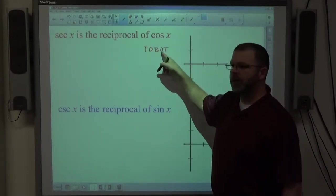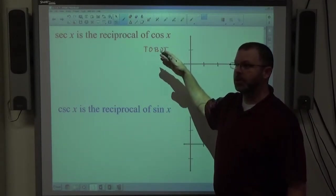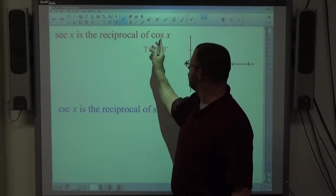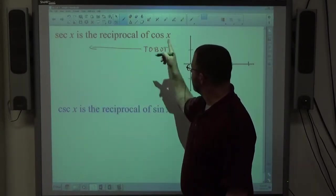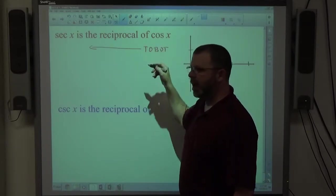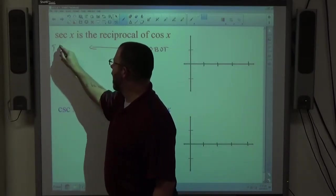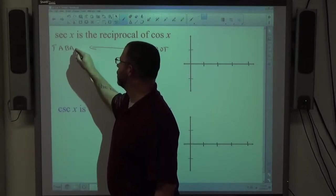And the reciprocal of zero is undefined, so it's an asymptote. So if I'm trying to use cosine's setup in order to create secant, top, bottom, top are going to be the same, zeros change to asymptote, so top, asymptote, bottom, asymptote, top.